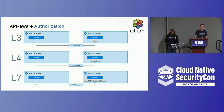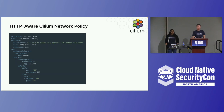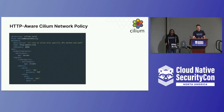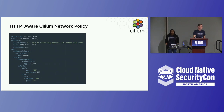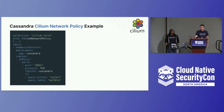Cilium also provides API-aware authorization — not just layer 3 on IPs or layer 4 on ports, but also layer 7 rules to filter HTTP requests on specific methods and paths. Here's an example Cilium network policy for a namespace 'demo': it applies to an application labeled 'app=server', with an ingress rule from endpoints labeled 'client' to port 80, then an HTTP rule allowing only GET on the path '/'. That's the only method and path permitted — nothing else. The lab includes examples of this as well.